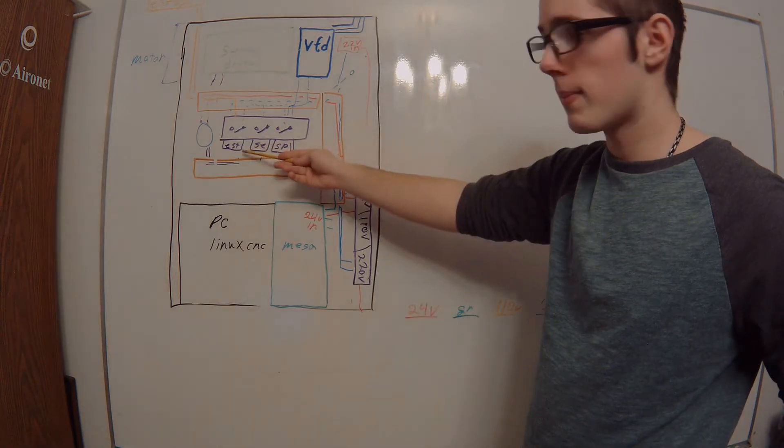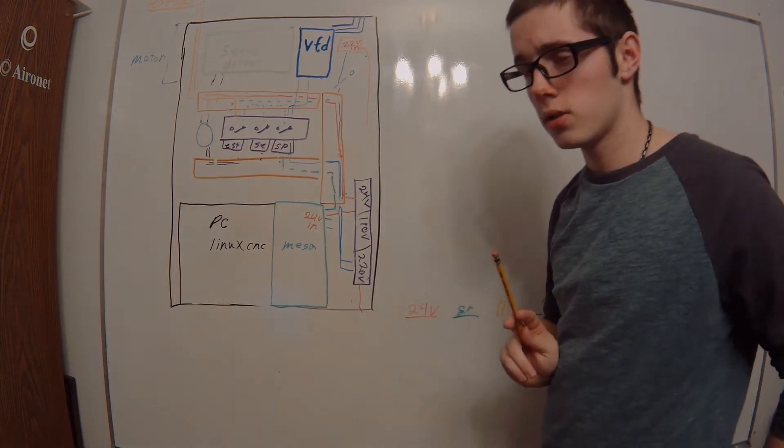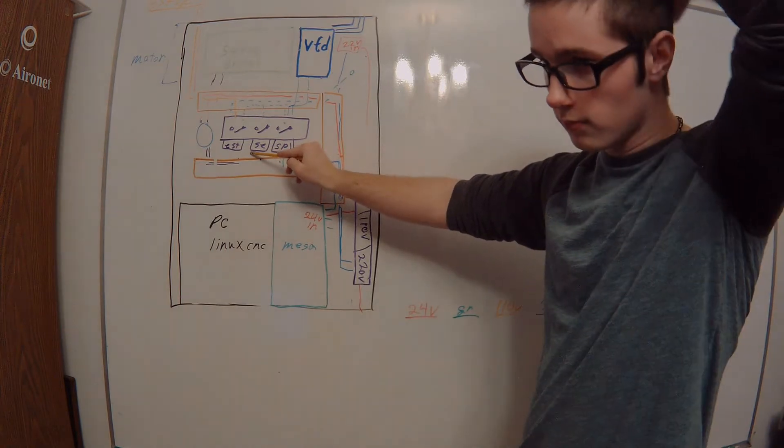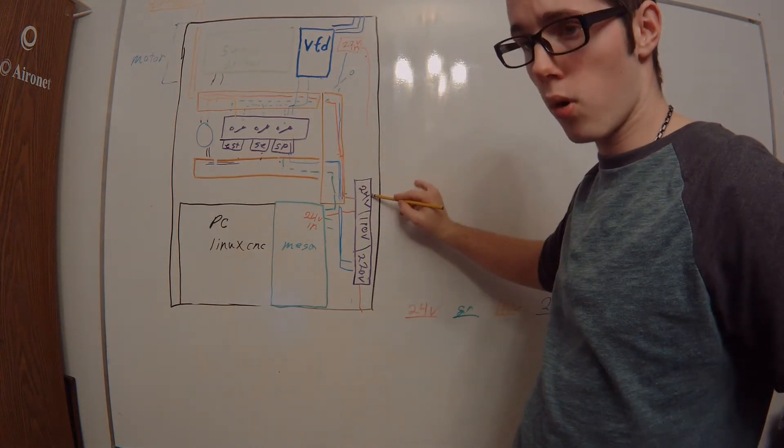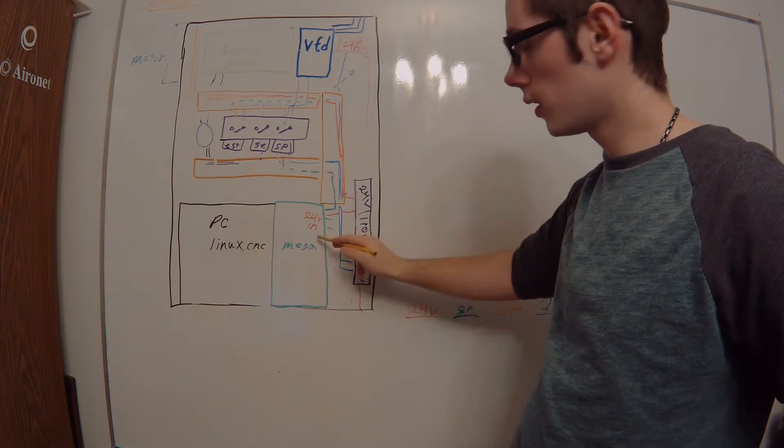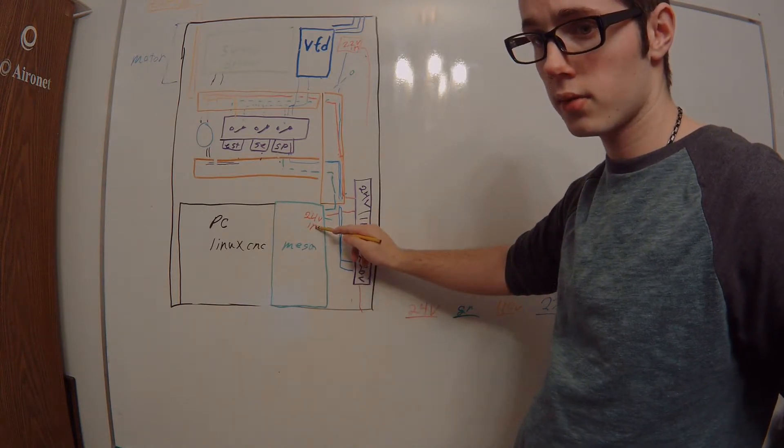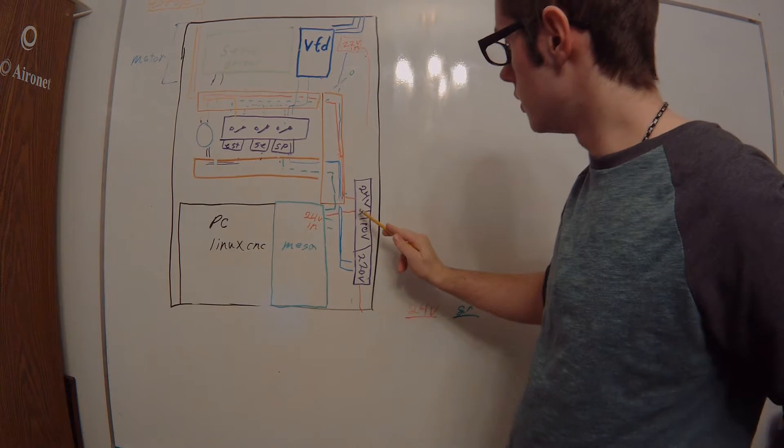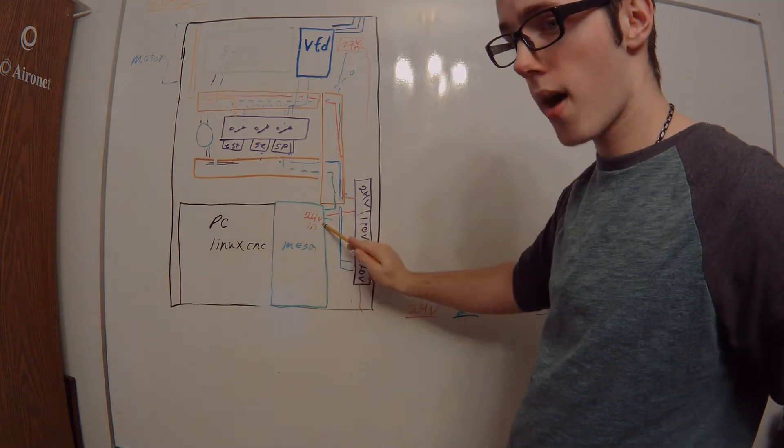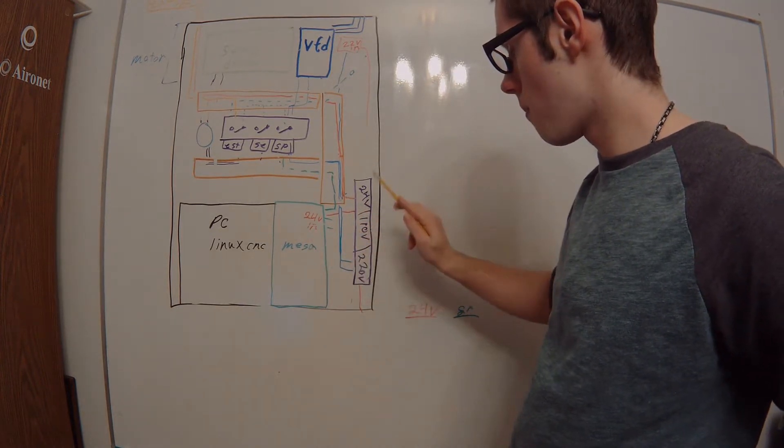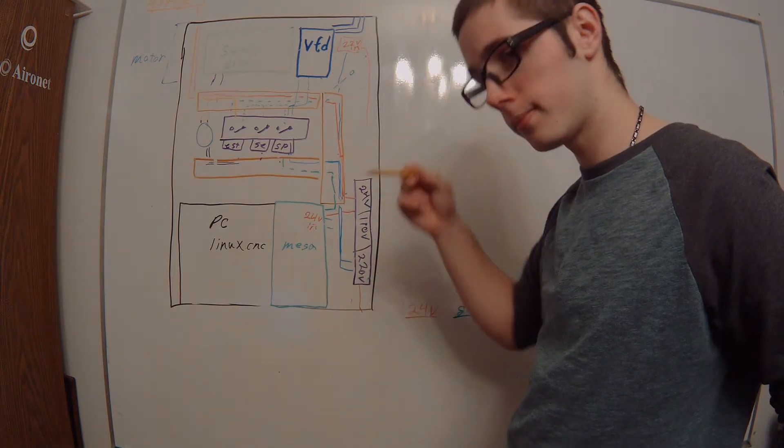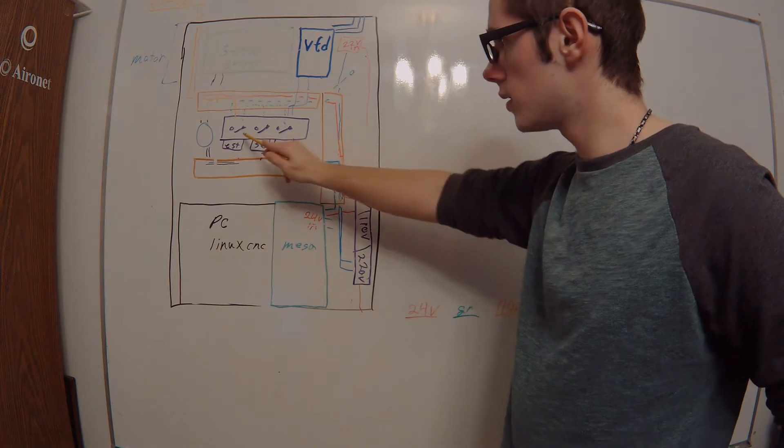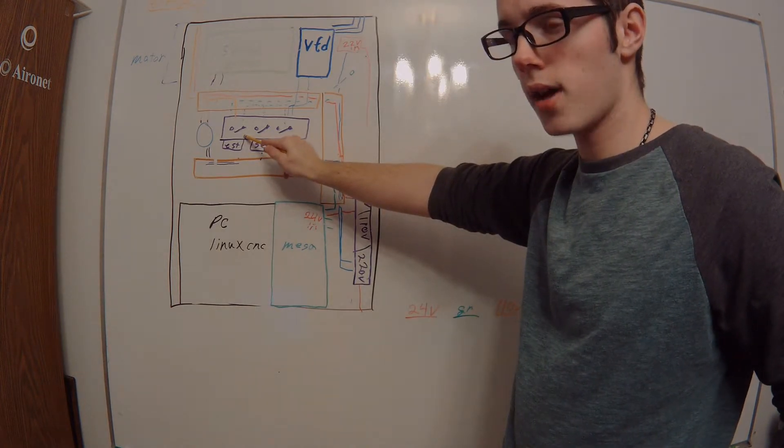Then we've got the E-stop. Now, the E-stop's interesting. The E-stop, your E-stop is connected to the 24 volt logic. That's also connected to your Mesa card. So you've got it connecting the I/O on the Mesa card, so it's now powering that. But what I also did is the E-stop is connected both to the Mesa card and to this guy right here, the E-stop relay.